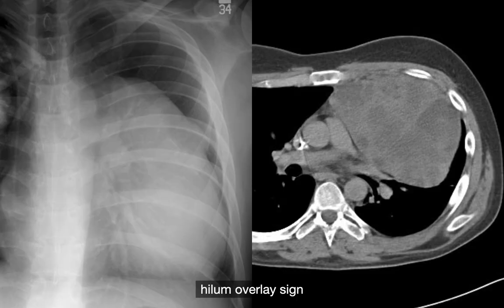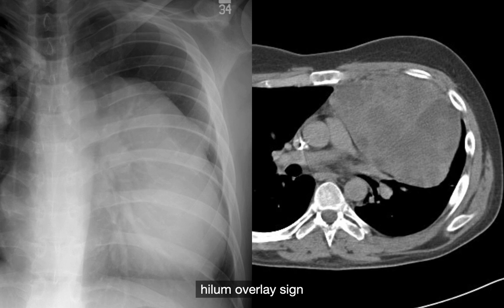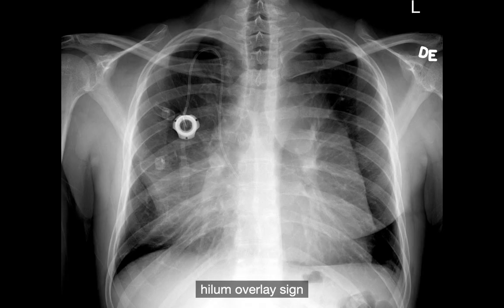Even when masses are pretty large, sometimes it's tricky to figure out if it's in the anterior mediastinum. The hilum overlay sign can sometimes help. If you can see the hilar vessels through the mass on the chest x-ray, that suggests the hilar vessels are outlined by air, meaning the mass is not a hilar mass but either anterior or posterior to the hilum.